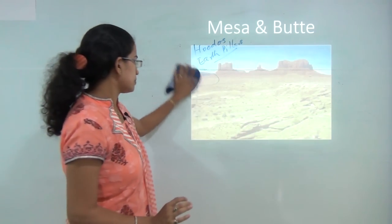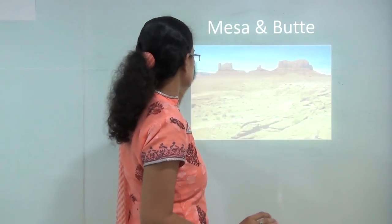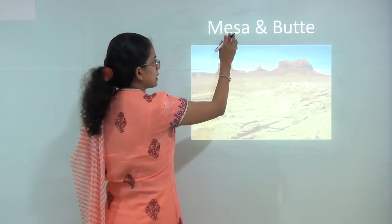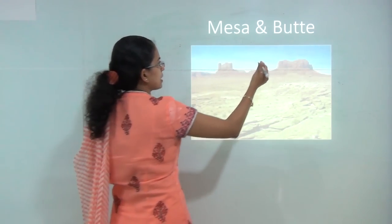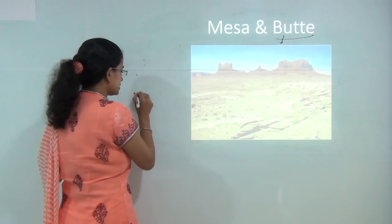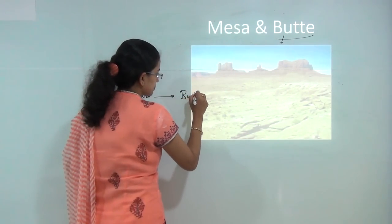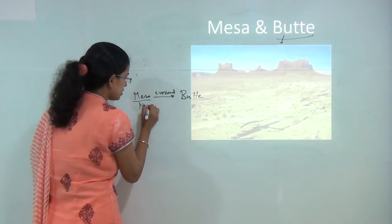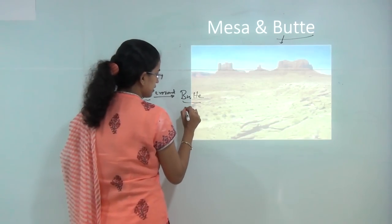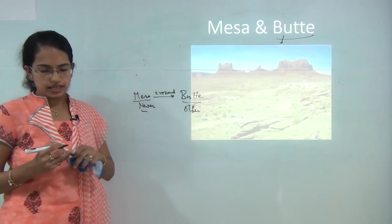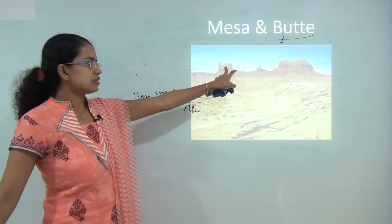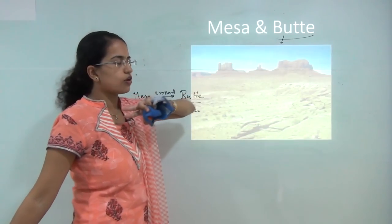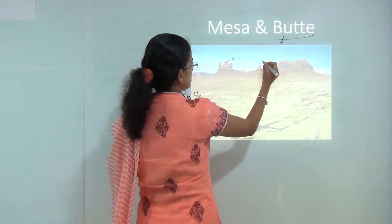The next is Mesa and Butte, one of the most popularly seen features. Mesas are rocks that erode over time. If the mesa rocks erode at a very high pace, the residual region is known as a Butte. So if a Mesa erodes at a very high rate it forms a Butte. Mesa and Butte are usually the result of hard rocks that withstand erosional activities, while the surrounding soft rock erodes away.